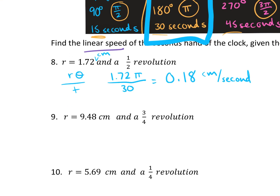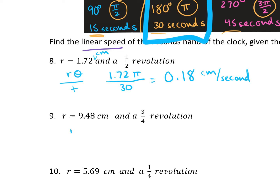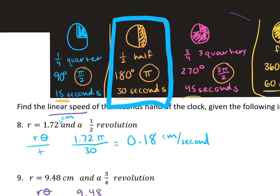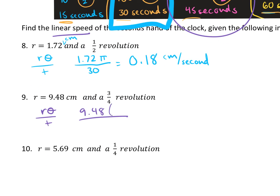For question 9: using V = rθ/t, the radius is 9.48. At three-quarters of a revolution, θ = 3π/2. The time for three-quarters of a clock is 45 seconds. Putting this into the calculator gives approximately 0.99 centimeters per second.